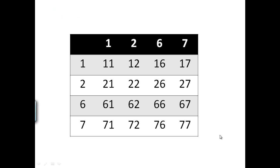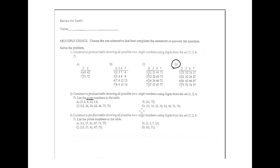Again using the product table, determine the even numbers. The even numbers are: 12, 16, 22, 26, 62, 66, 72, and 76. The answer corresponds with option D.